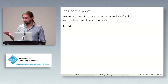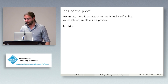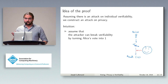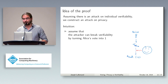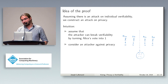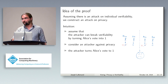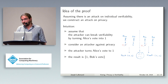The idea of the proof is that we assume there is an attack on individual verifiability and construct an attacker that can break privacy. For example, assume the attacker can break individual verifiability by turning Alice's vote into one — no matter what Alice chooses, the result is one. Then consider an attacker against privacy: on one side, Alice votes zero and Bob votes one; on the other side, Alice votes one and Bob votes zero. The attacker replays the verifiability attack on Alice to replace her vote with one. The result on the left becomes one-one, and on the right one-zero — that is, one plus Bob's vote. The attacker then learns how Bob voted, which breaks privacy.